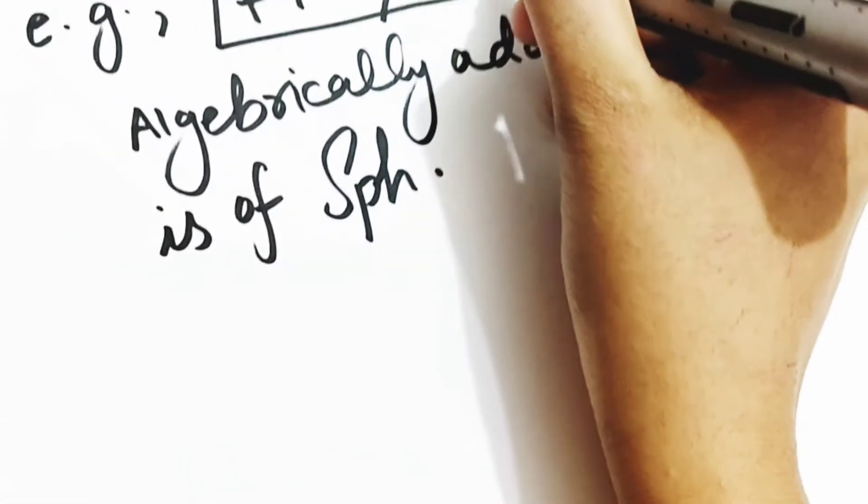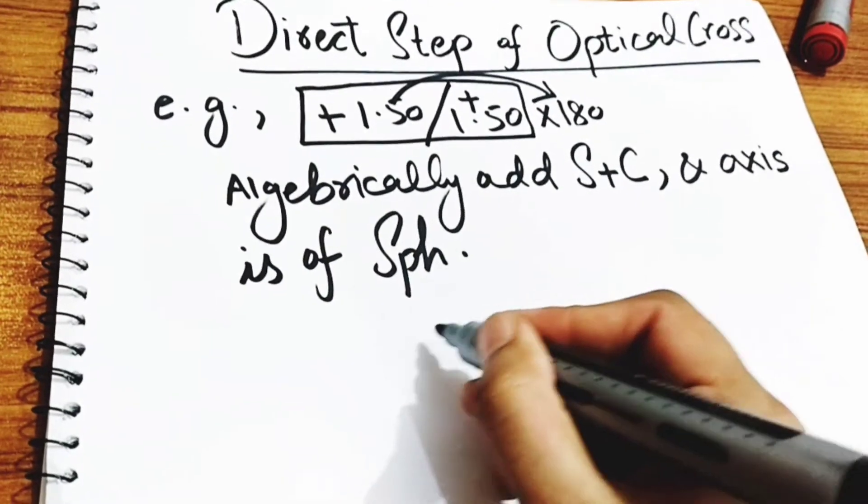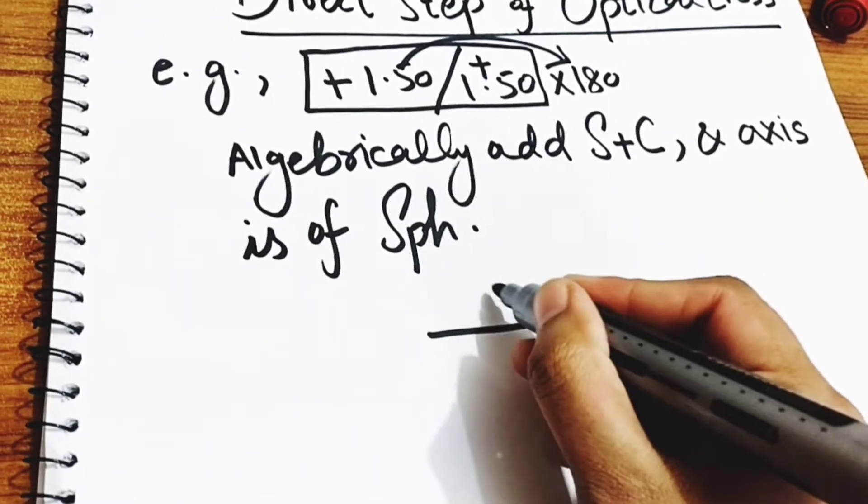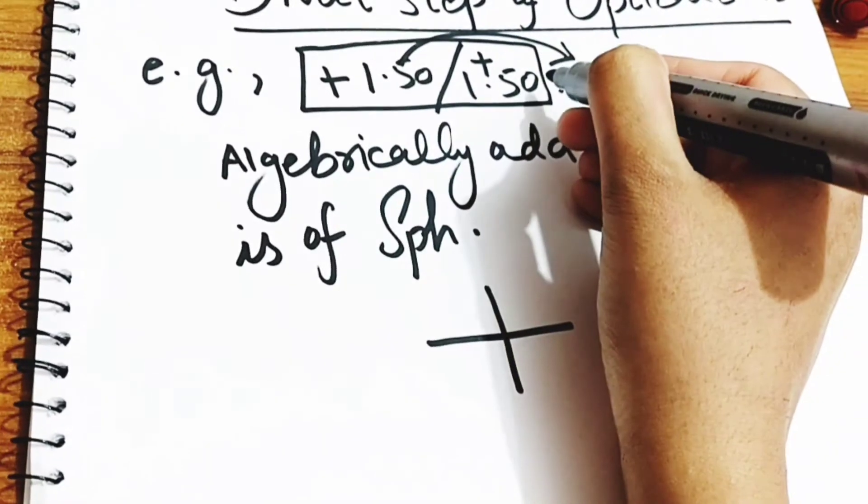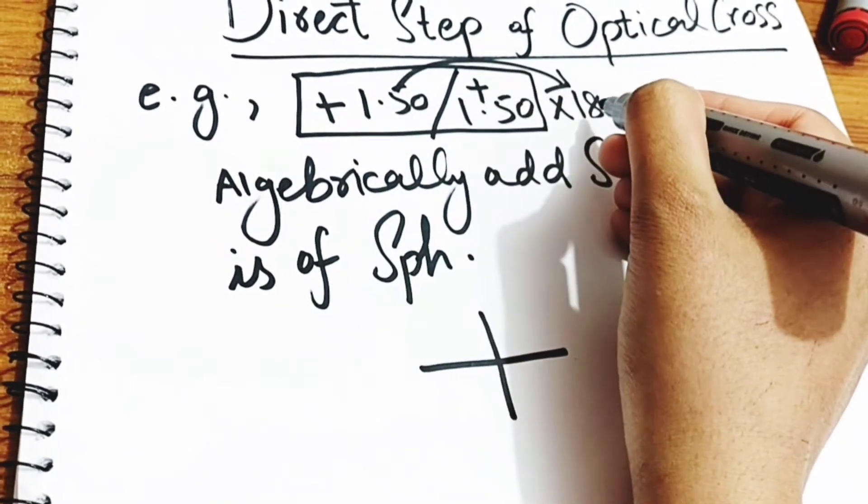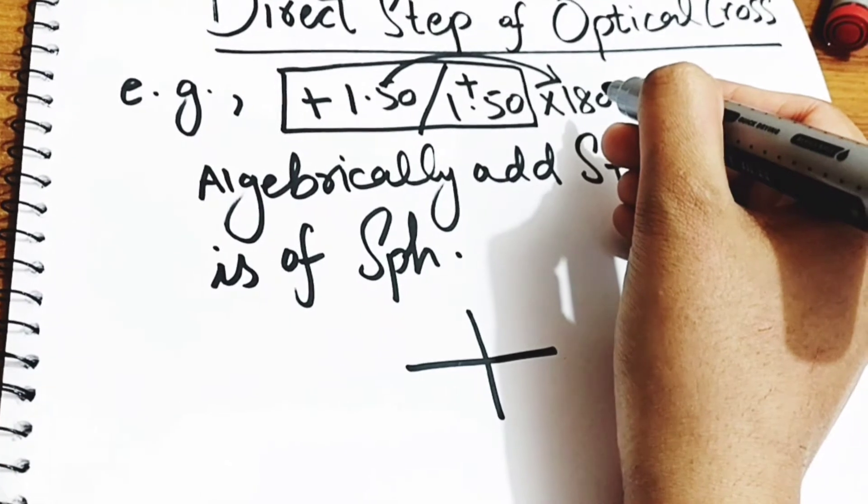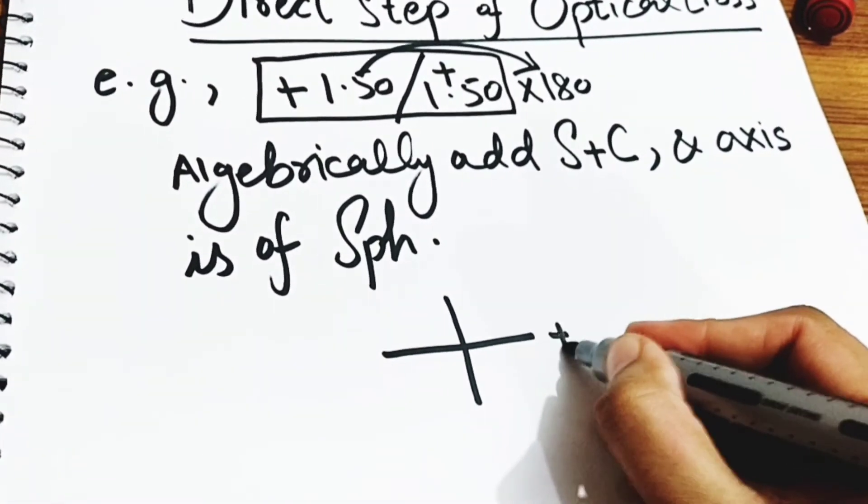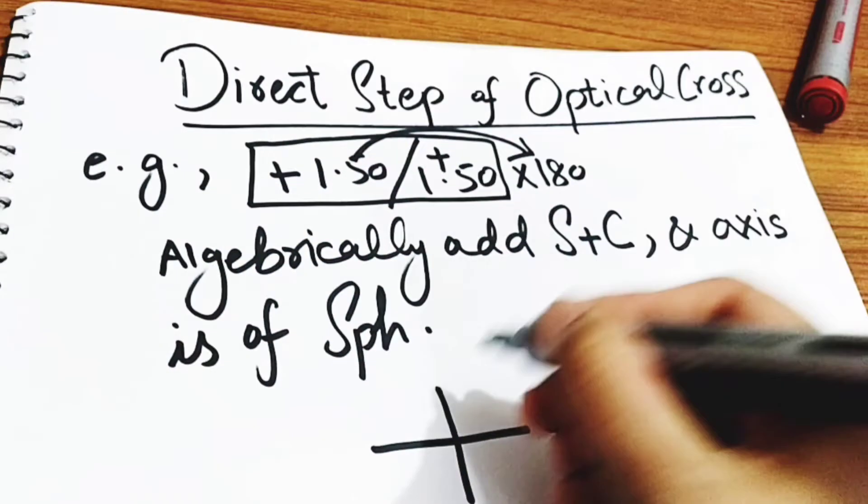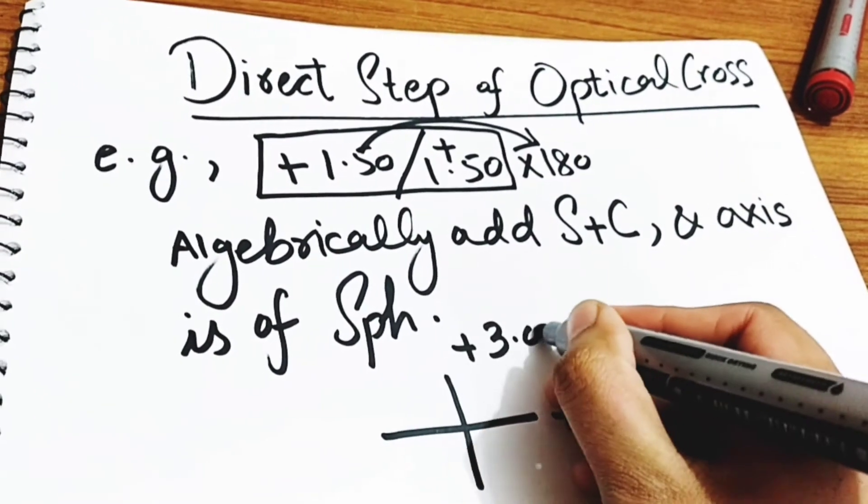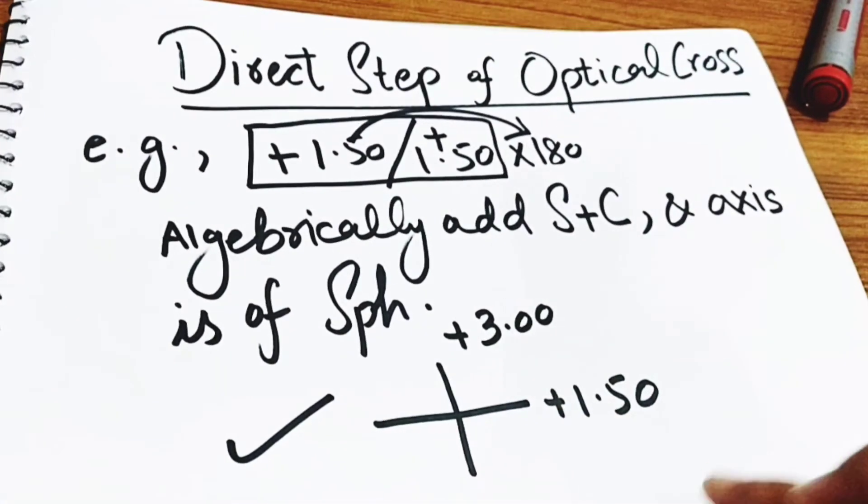Plus 1.50 plus 1.50 will become plus 3, and axis is of sphere. So 1.50 is at 180, plus 1.50 at 180. Algebraically add sphere and cylinder, so plus 3 will be at 90. This is the direct step of optical cross.